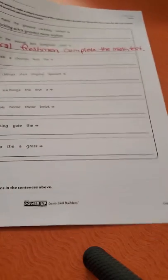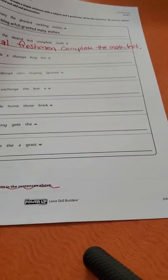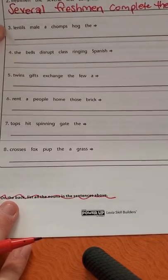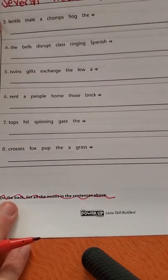So you do not have to do the star at the bottom. So don't worry about that guy. Let's go ahead and read the word so you know what you're working with here. Number three, lentils, mail, a, chops, hog, the.